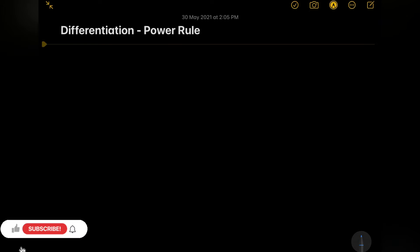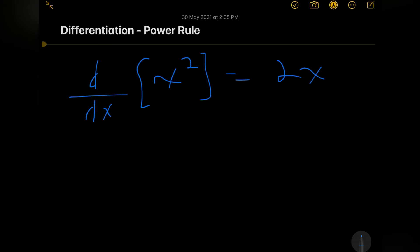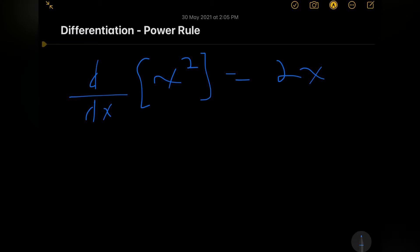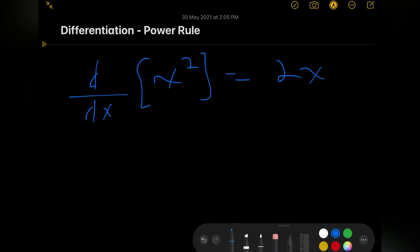The derivative of x squared, written as d/dx of x squared, is equal to 2x. From using first principles, we know that we can prove this. So let's look at this using first principles.